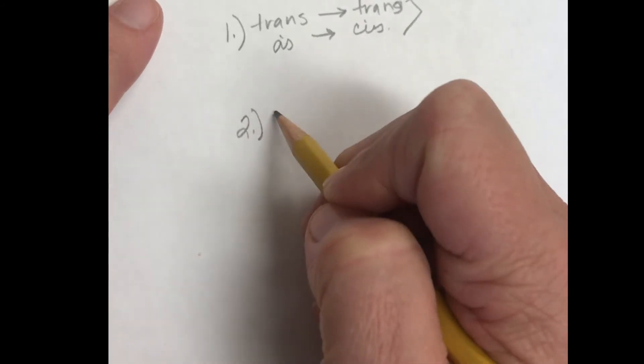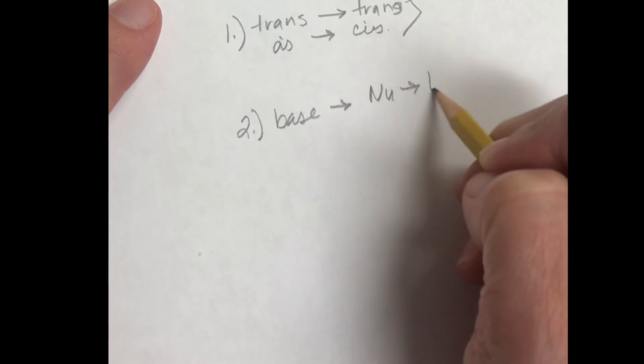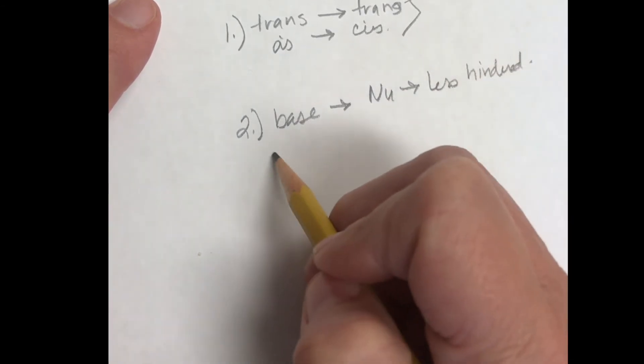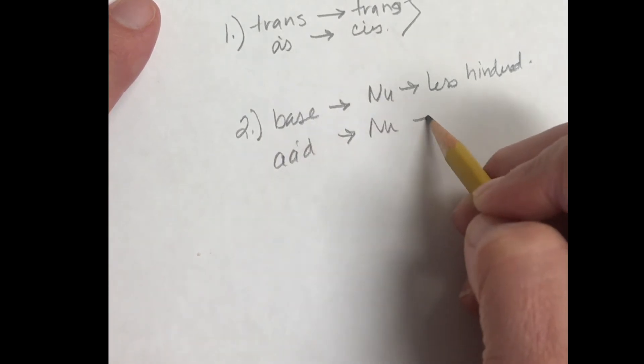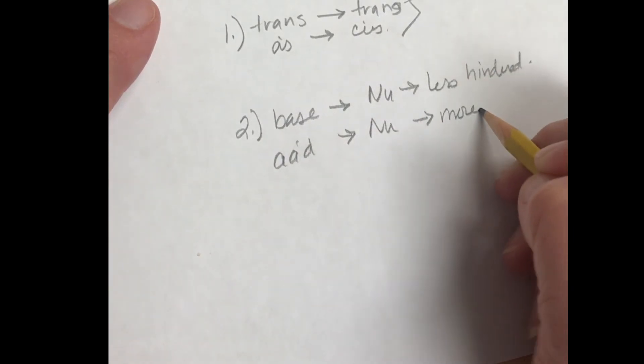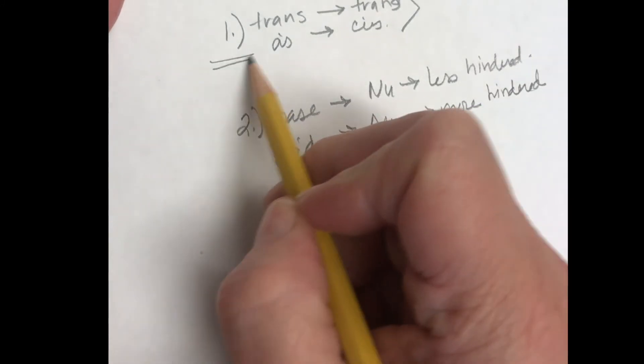And then the second rule is, in basic conditions, the nucleophile goes to the less hindered. And in acid conditions, the nucleophile goes to the more hindered. And that's because we're going to form a stable carbocation. So these are the two main rules.